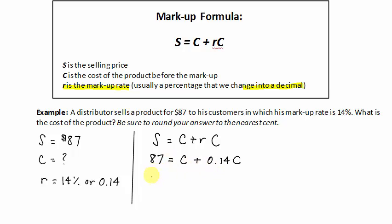But if we look at this even closely, let me rewrite it so maybe you can see it better. This is like 87 equals 1C plus 0.14C. So we can see that these two terms on the right are like terms. If I had a dollar, and then I gave you 14 cents, you would have a total of $1.14. So 1.14C. So 1C plus 0.14C gives me 1.14C.